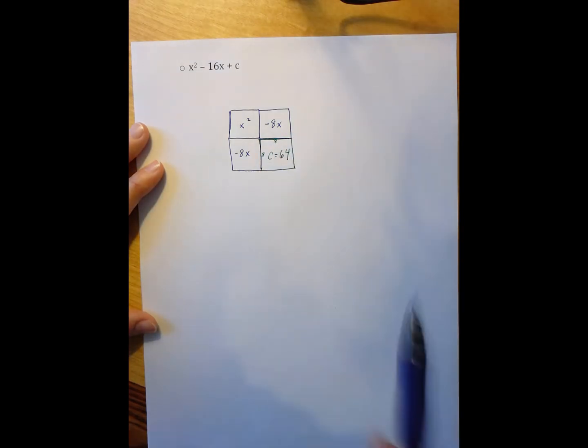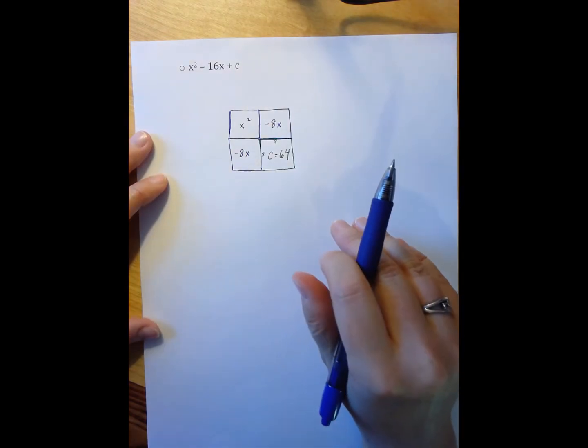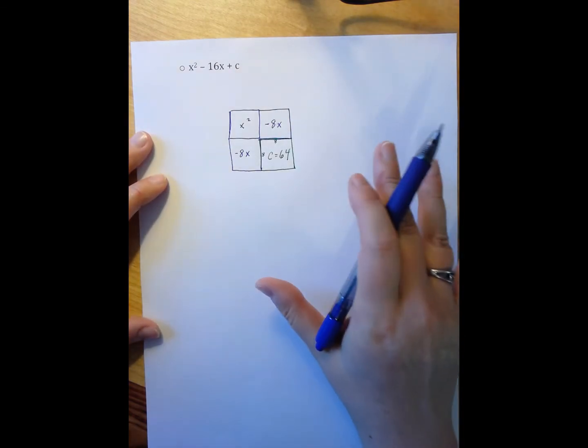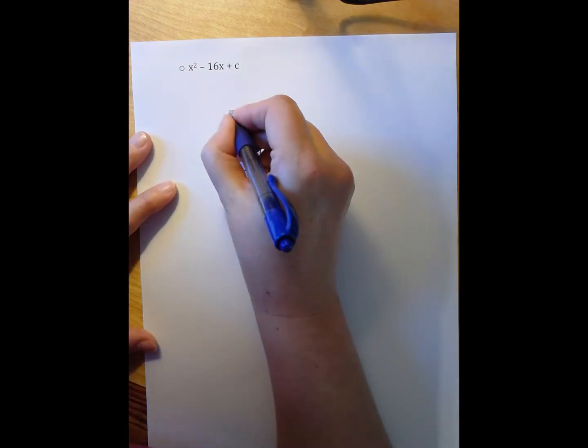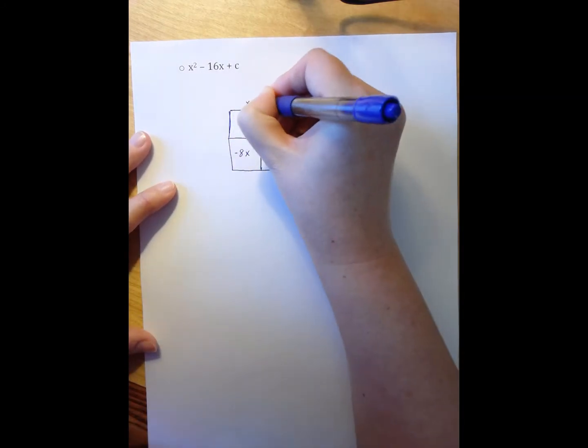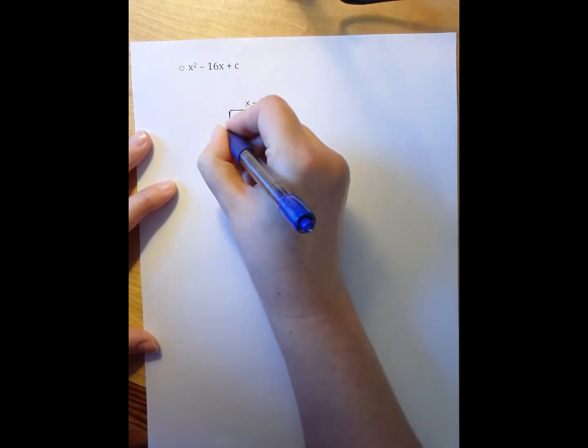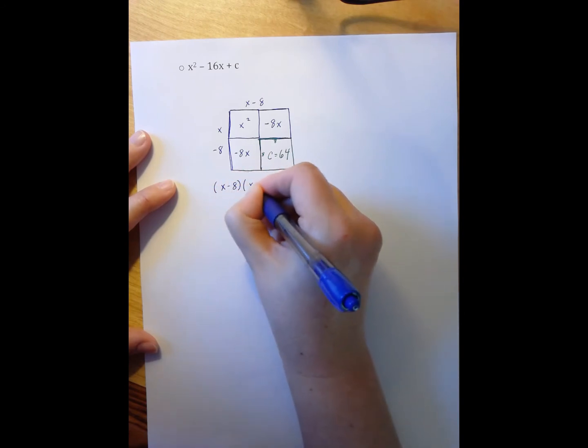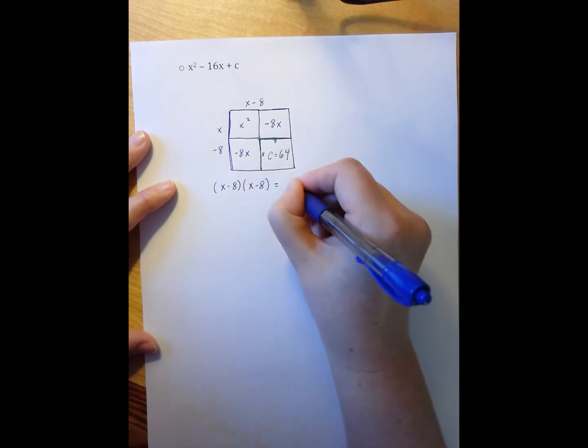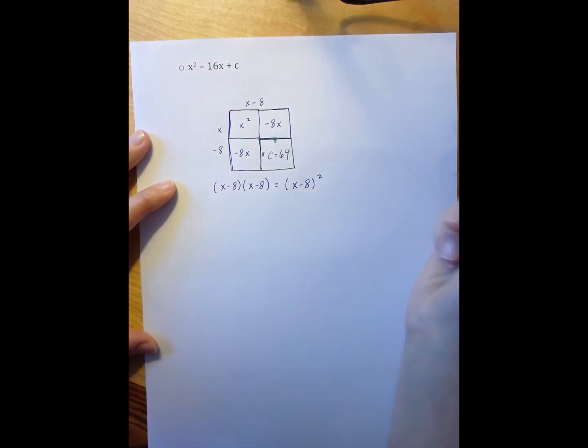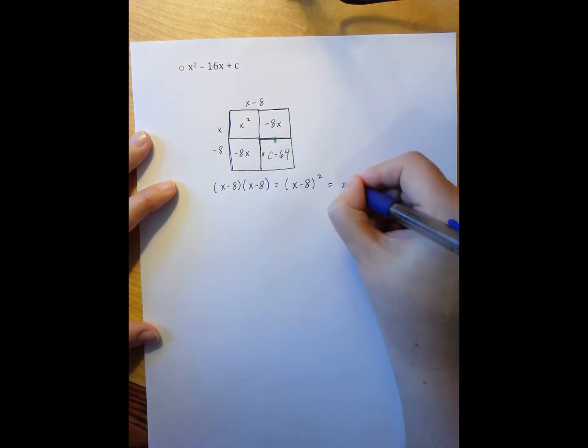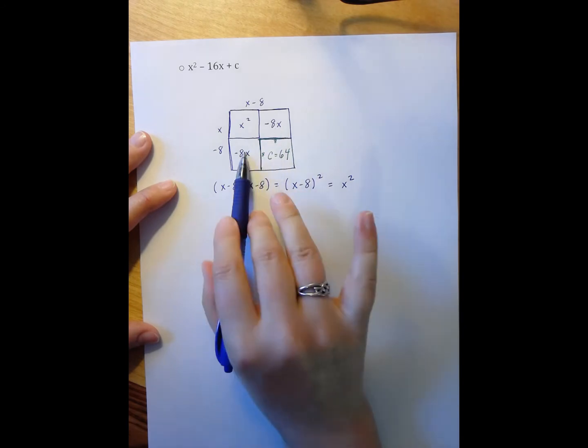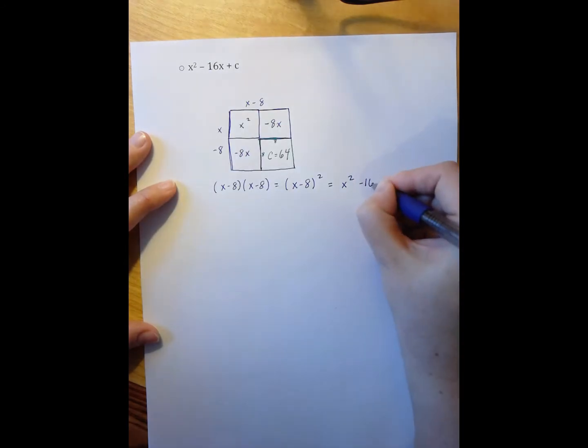So I now can write this picture as an area and as a length times a width. So my length is x minus 8. My width is x minus 8. So I can write that as x minus 8 times x minus 8 or as x minus 8 squared. And then I know that equals my entire area, which is x squared, adding these two or going back to the original problem, minus 16x plus my C, which is 64.